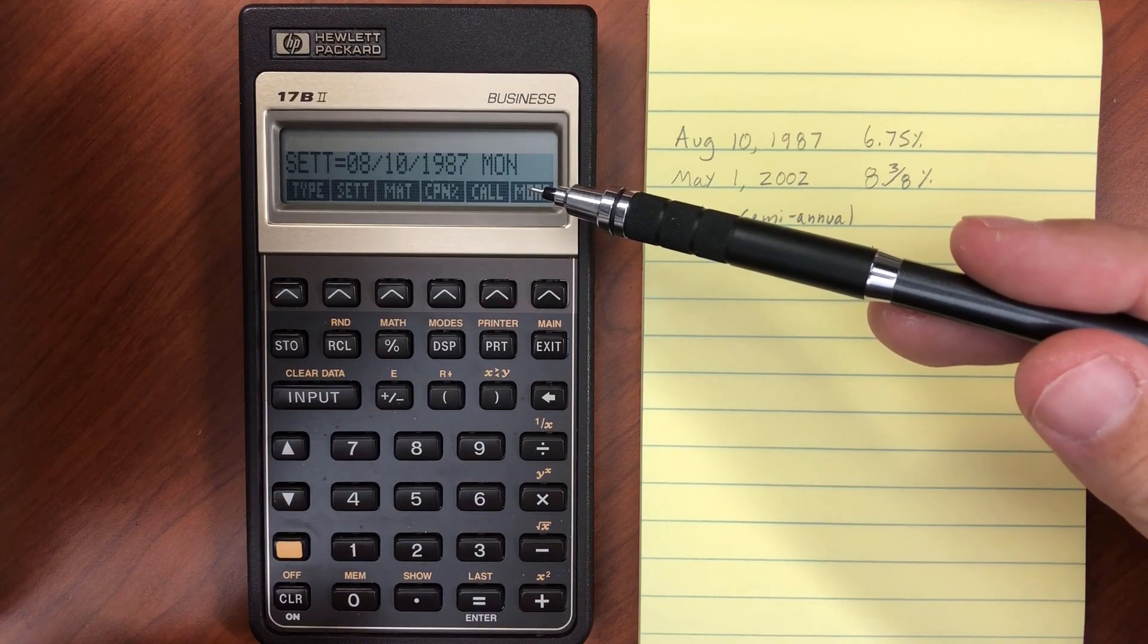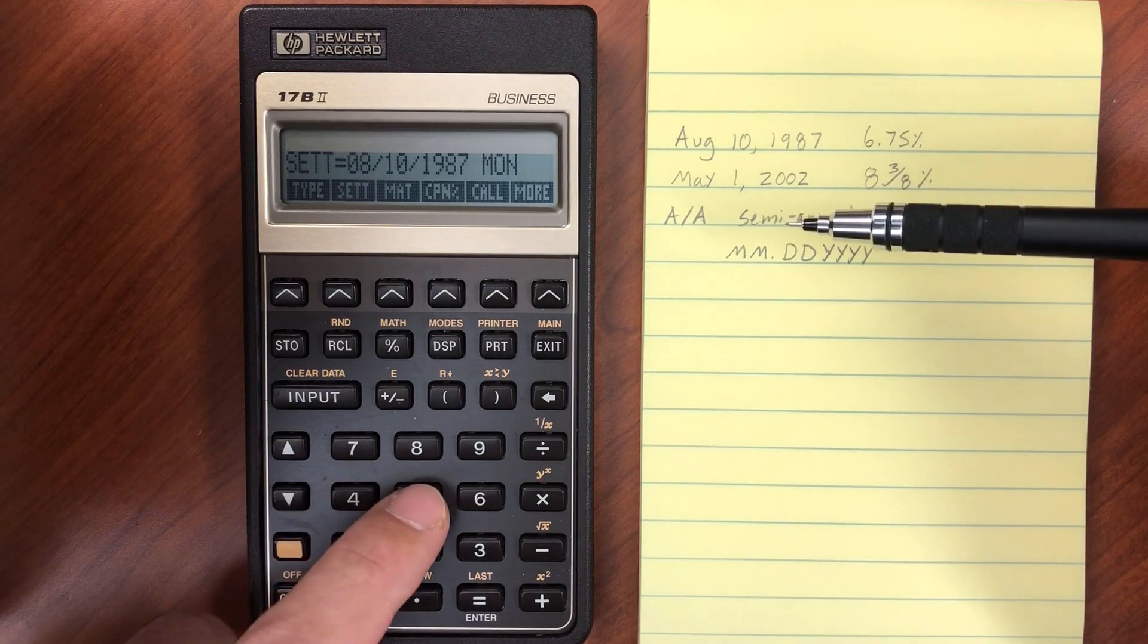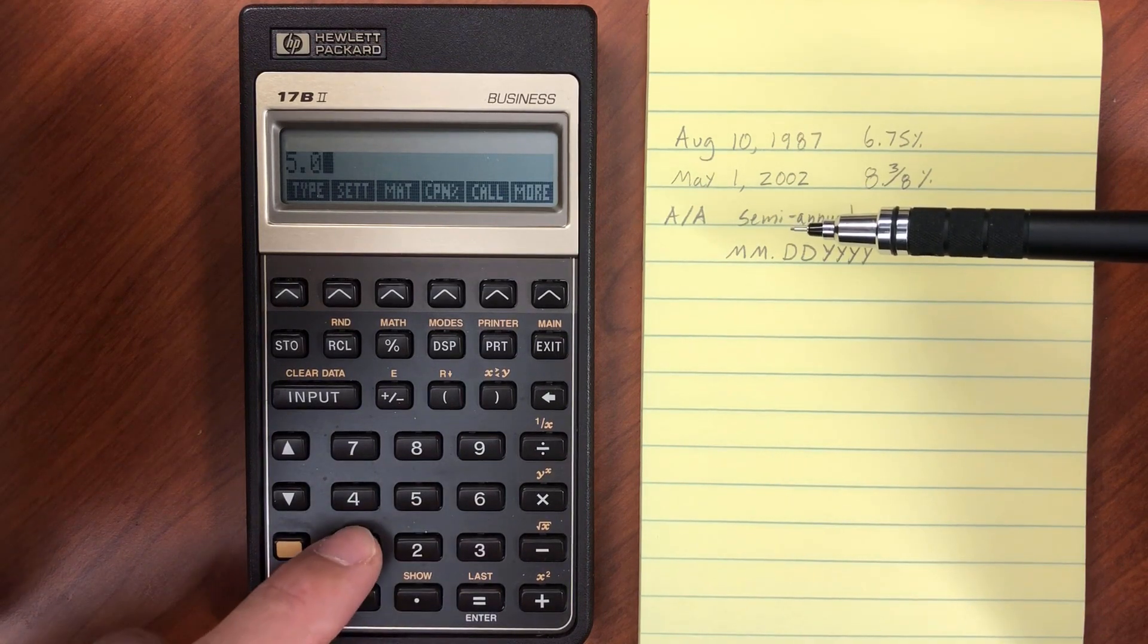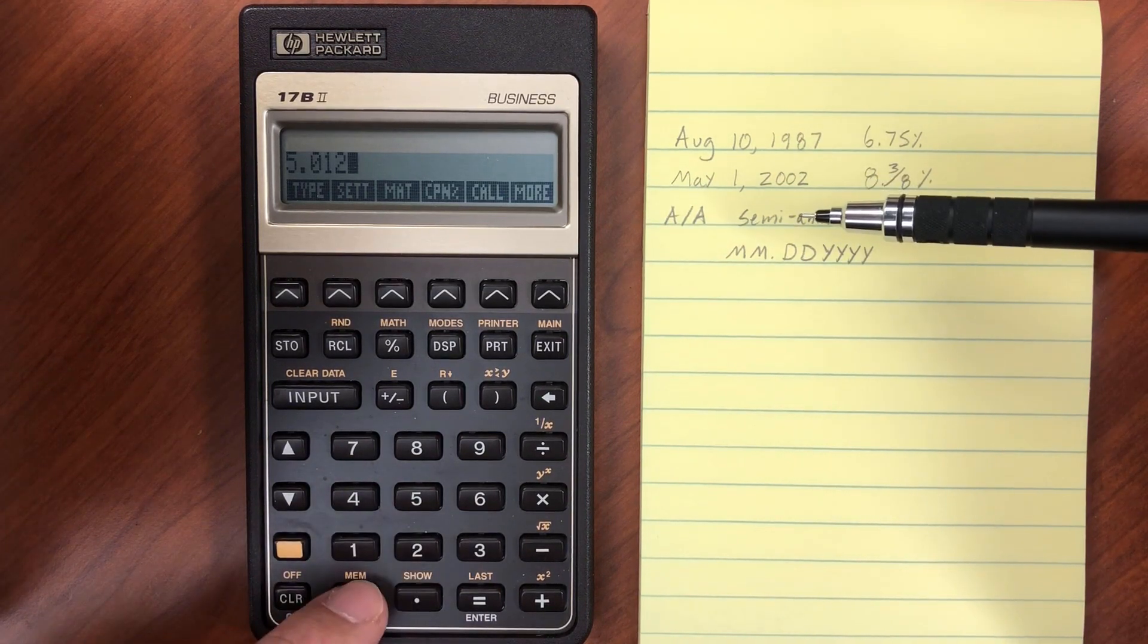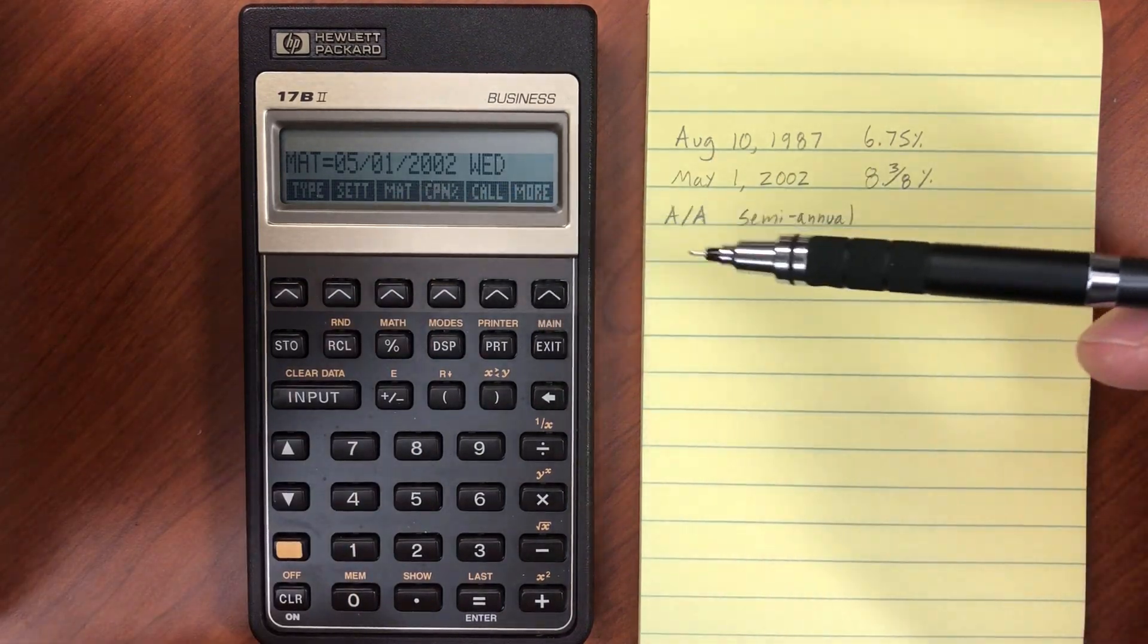There we can see it's been entered. The maturity date is going to be May 1st, so 5.01.2002.